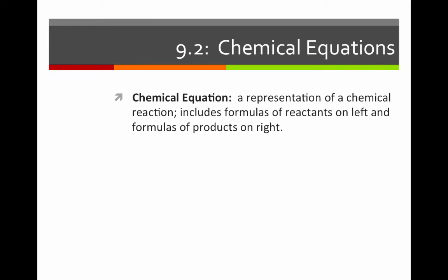A chemical equation is a representation of a chemical reaction that includes formulas of the reactants on the left and formulas of the products on the right. For instance, if we react iron and oxygen, we get iron oxide. We can write the formulas as shown with the reactants on the left and the products on the right.